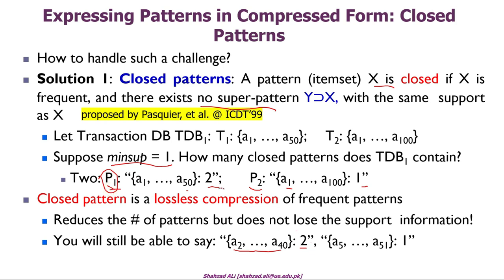The support information of A2–A40 is the same as the support count of closed pattern P1. Similarly, a pattern like A5 to A51 can be represented by closed pattern P2, with support count 1 — matching P2's support count. There is nothing lost, which is why we say closed pattern is a lossless compression.